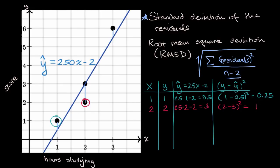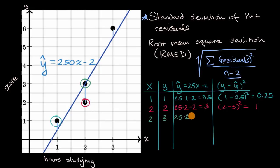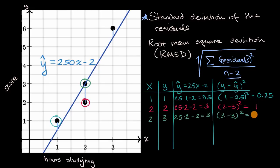Then we go to the point (2, 3). Our estimate from the regression line is 2.5 times two minus two, which equals three. So our residual here is zero — you can see that point sits on the regression line — so (3 minus 3)² equals zero.